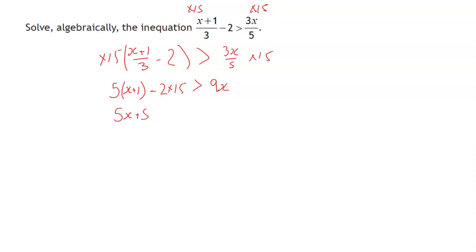So I'll end up with 5x plus 5 minus 30 is greater than 9x. So 5x minus 25 is greater than 9x. What I'm going to do is I'm going to shift the 5x across to the left by subtracting it from both sides. I'm then going to get negative 25 is greater than 4x. So negative 25 over 4 is greater than x. So I've got my solution like that.